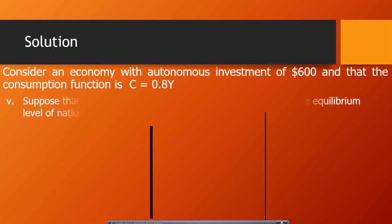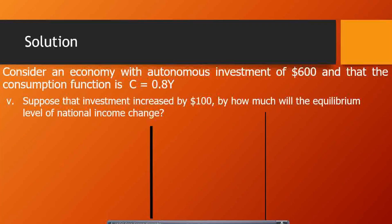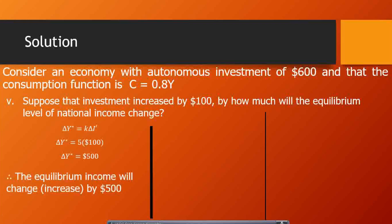Suppose investment increases by $100. The change in income equals the multiplier times the change in autonomous expenditure. Our multiplier is 5 and the change in investment is $100, so 5 times $100 = $500. Therefore, an increase in investment of $100 will lead to a $500 increase in national income.